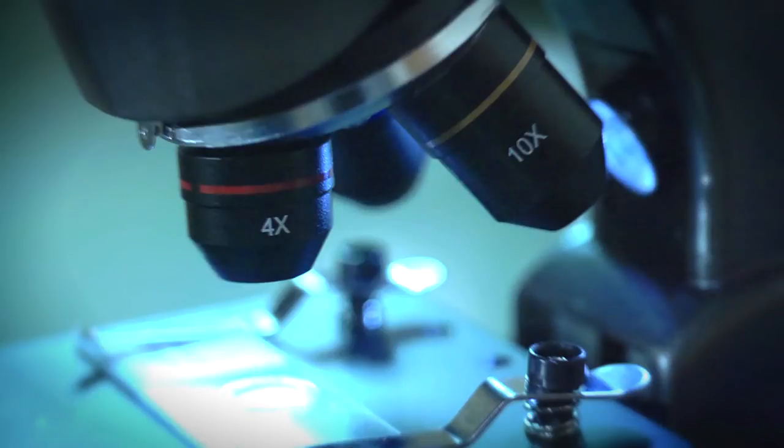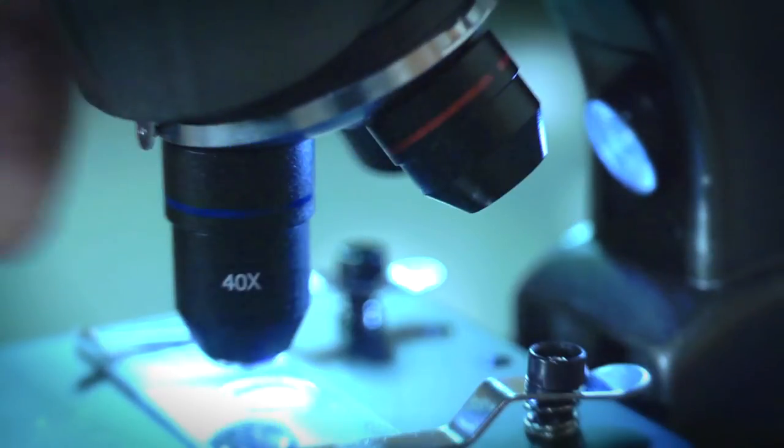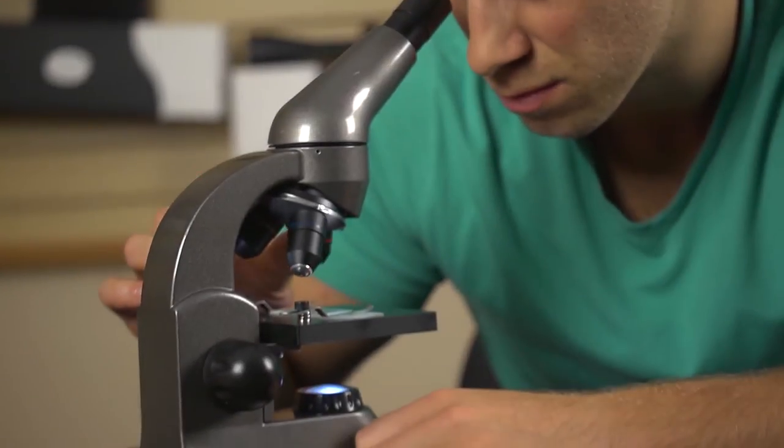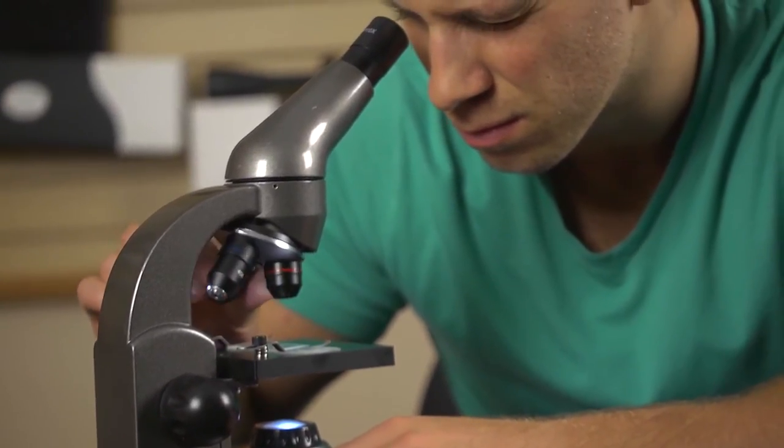The lenses we've included have a power of 4, 10, and 40. But in order to know the overall magnification of a microscope, you need to multiply the power of the objective lens with the power of the eyepiece.